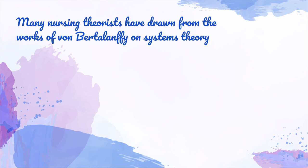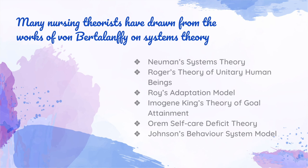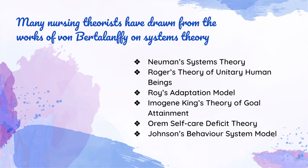Many nursing theories have drawn from the works on systems theories, including Newman's system theory, Rogers' theory of unitary human beings, Roy's adaptation model, Imogen King's theory of goal attainment, RM self-care deficit theory, and Johnson's behavioral system model.